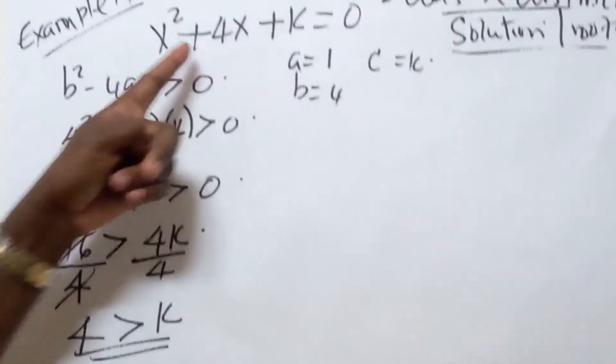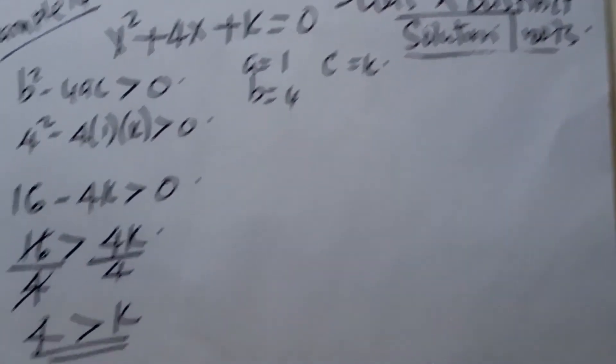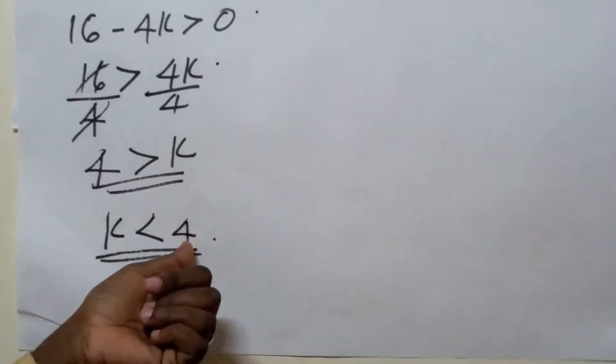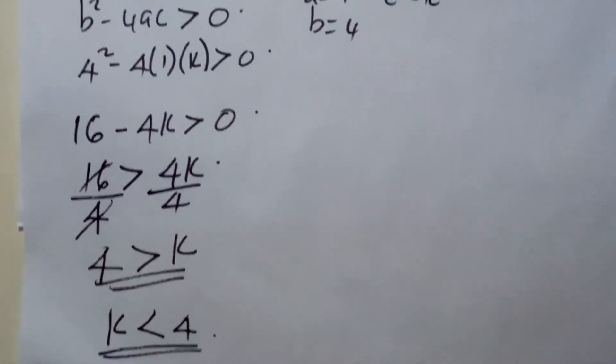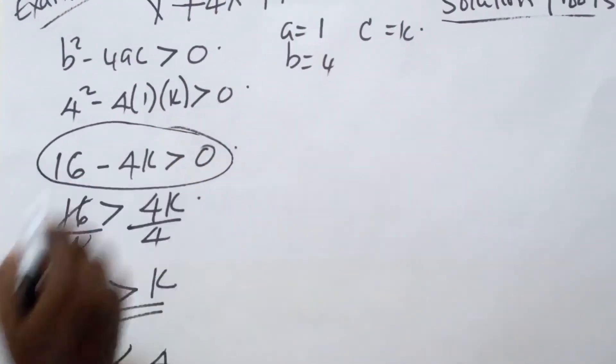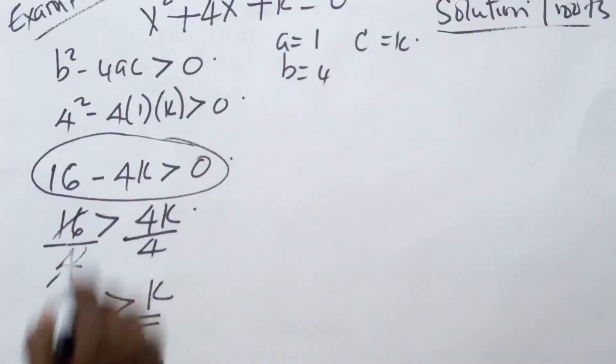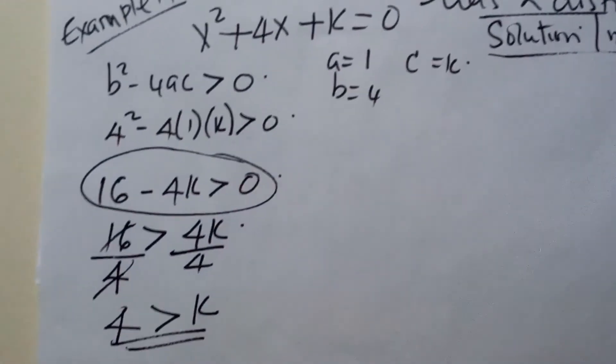If this particular function has to have two distinct roots, our value of k has to be less than 4. And that is just what we are expected to do because it is being realized from the nature of discriminant. And when it is greater than 0, then we expect two distinct solutions or two distinct roots.